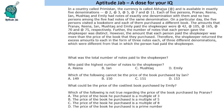Hello everyone, welcome to Aptitude Jab. This problem says that in a country called Pramistan, the currency is called Abhajjiv and is available in 5 denominations: 2, 3, 5, 7, and 11.